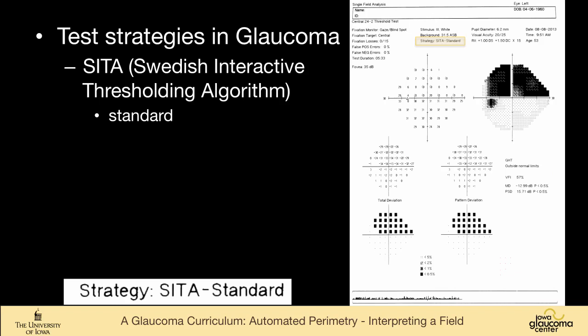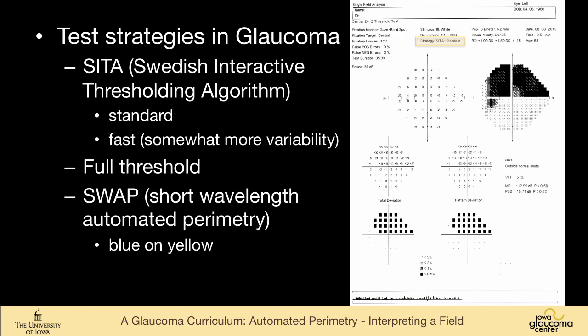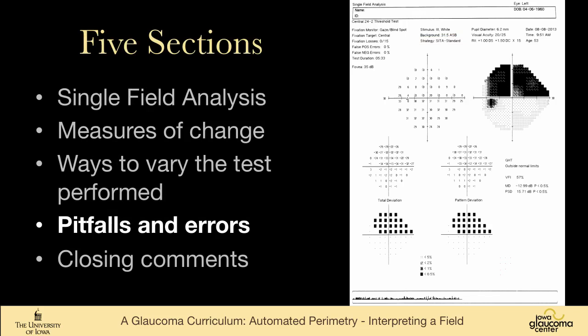So we're using the SITA, Swedish Interactive Testing Algorithm, which is a way of speeding up the test compared to a full threshold test. And this is a standard. There is a fast version, which is a little bit quicker, but has more variability and really should not be used routinely for following people with disease. You can do a full threshold, so if you have a really old perimeter, you might only have the full threshold option. And then SWAP, which was in vogue for a while because it was felt to pick up earlier field loss with the blue on yellow targets, but there's some question that that's really not that helpful, and I almost never use that. Some people do for patients with very early disease or with no disease trying to pick up the earliest possible loss.